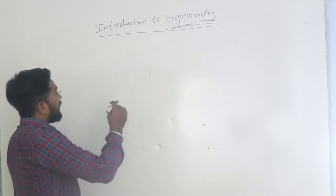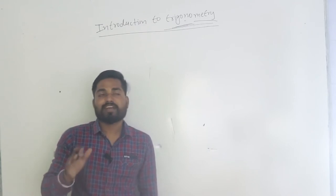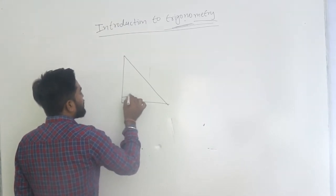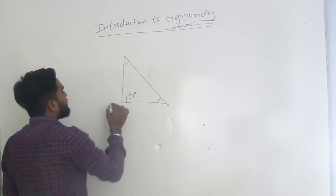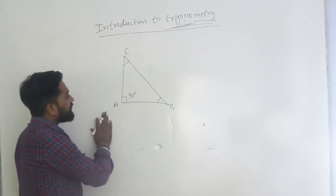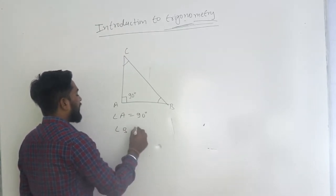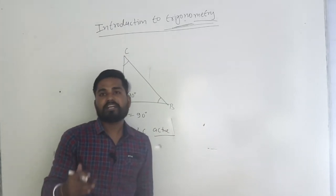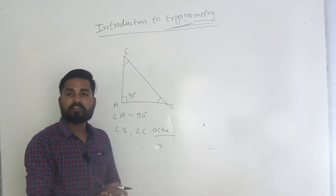Particularly in trigonometry, we take a right angle triangle. What is a right angle triangle? One angle should be 90 degrees, and the remaining two angles have to be acute angles. For example, angle one equals 90 degrees, and the other two angles — angle B and angle C — are acute angles, maybe 30 and 60. According to the angle sum property, the sum of all three angles of any triangle is 180 degrees.